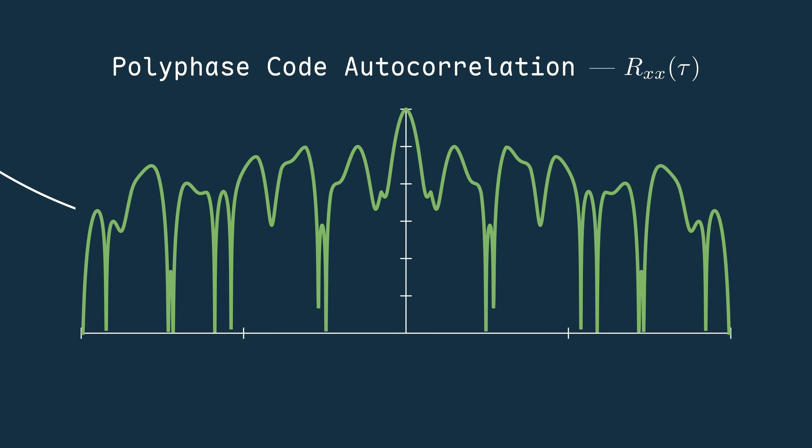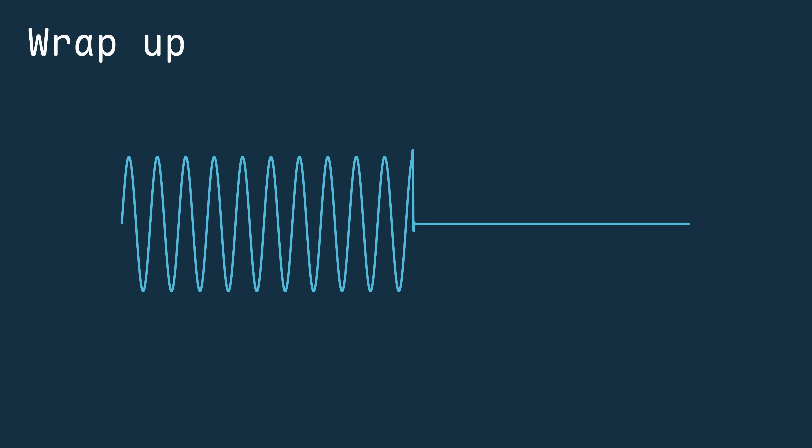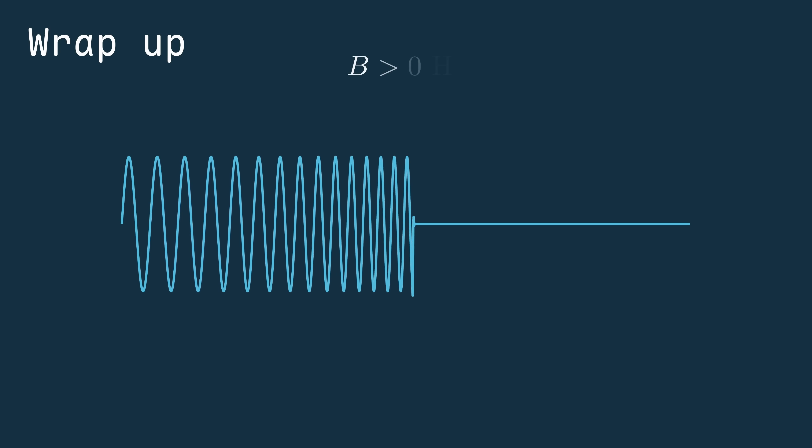For now, let's step back and recap what pulse compression and matched filtering actually give us. In a pulse compressed system, we take a normal transmit signal, give it some structure, which really just means non-zero bandwidth,